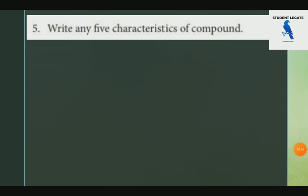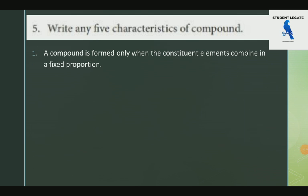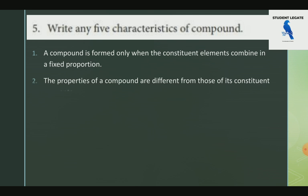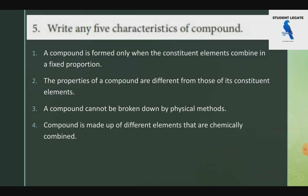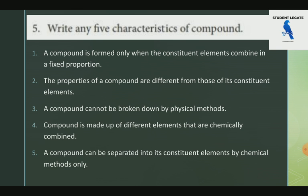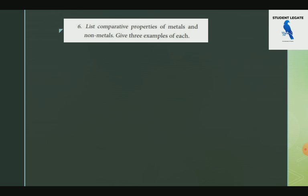Write five different characteristics of a compound. First, a compound is formed only when the constituent elements combine in a fixed proportion. Second, the properties of a compound are different from the properties of its constituent elements. Third, the elements in a compound are chemically combined. Fourth, that is, it involves metal and non-metal combinations.